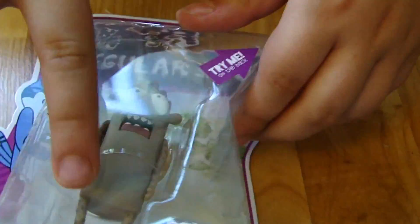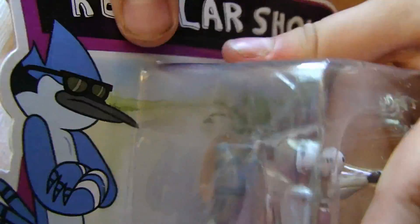There's a card to Cartoon Network 4+ and it says Rigby, and it says Pops, Mordecai, and Benson, which I already have Mordecai. They don't have Benson or Pops on the website.